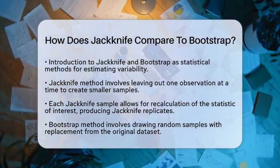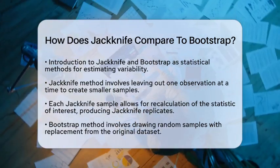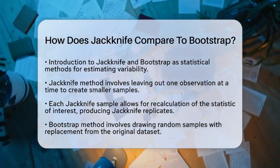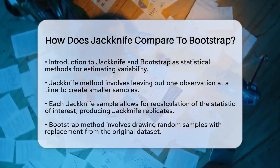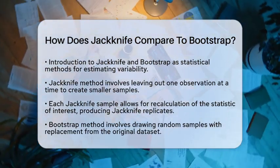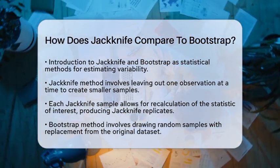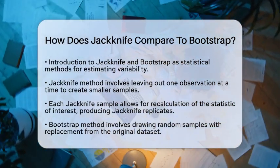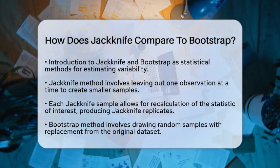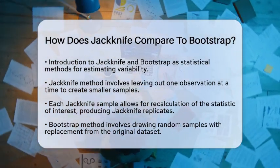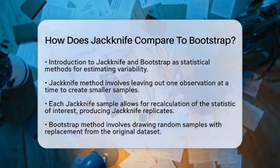Let's start with the basics. The Jackknife method works by systematically leaving out one observation from the sample at a time. This means if you have 10 data points, you will create 10 smaller samples, each missing one of those points. For each of these samples, you recalculate the statistic you are interested in. This produces a set of Jackknife replicates that help estimate the standard error and bias of the statistic.